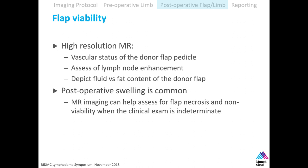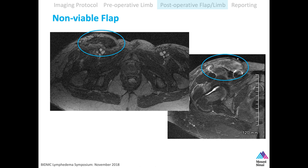For flap viability, we look for three things: vascular status, lymph node enhancement, and fluid versus fat. Post-operative swelling can be common in these flaps, so clinically it may be difficult to determine whether the flap is viable. Here's an example of a non-viable flap. Previously the fat-saturated fat was dark; in this case the fat is bright but the flap is completely dark — no enhancement — and it's filled with edema on T2-weighted sequence. This non-viable flap was confirmed surgically.